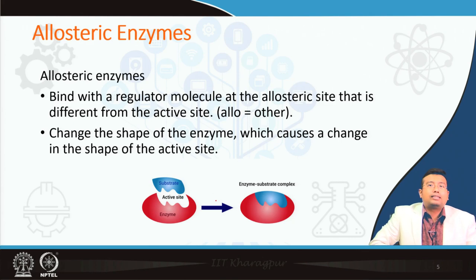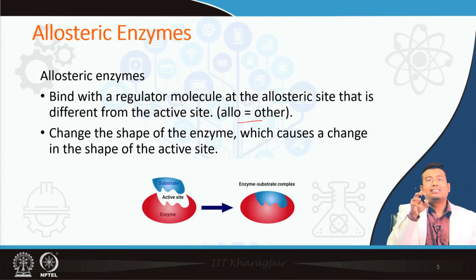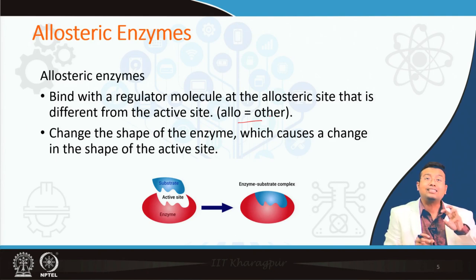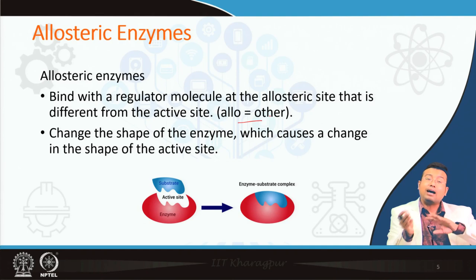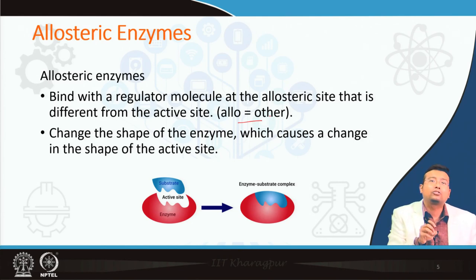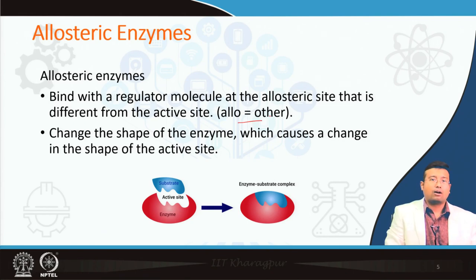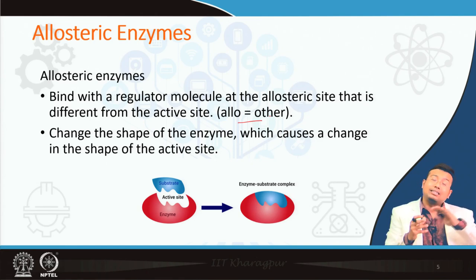What is an allosteric enzyme? The term 'allo' means 'other.' There is some regulator molecule — an x-factor or something other than the substrate — that will get attached to the enzyme at a site which is not the active site; this is some other site. Hence the concept of 'allosteric.' When it gets attached to the enzyme at that other site, it alters the shape of the enzyme, or the shape of the active site, such that the enzyme cannot bind to the substrate as it used to.